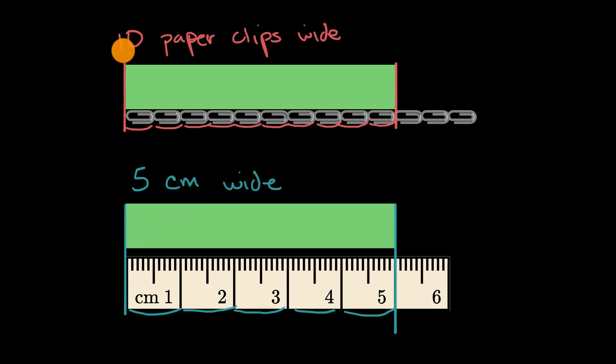So notice the same rectangle has the same width. It's 10 paper clips wide and it's five centimeters wide. So its width is more paper clips than centimeters is one way to think about it.